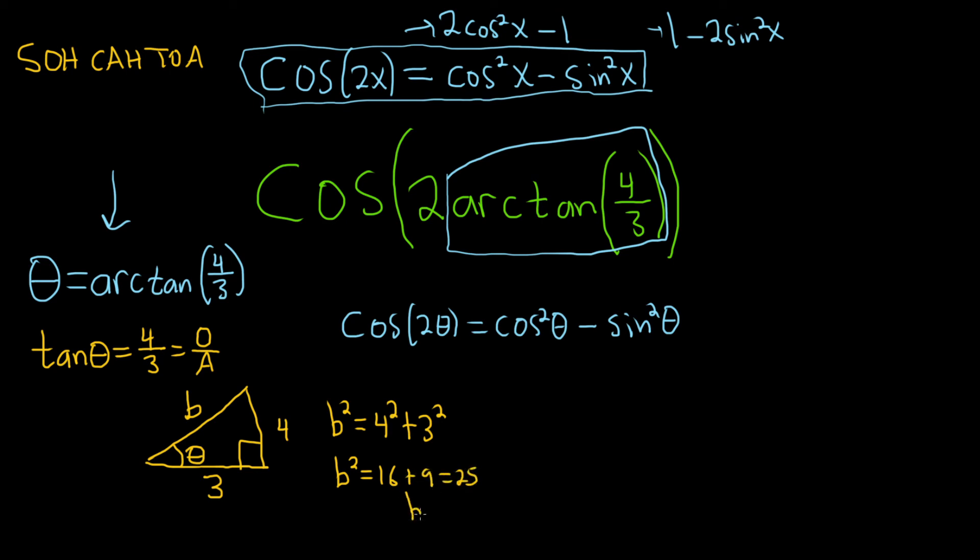So when you take the square root, you do get plus or minus 5. But we just take the plus, okay, because it's the length of the side of a triangle.